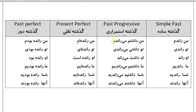گذشته استمراری (past progressive): من داشتم می‌راندم، تو داشتی می‌راندی، او داشت می‌راند، ما داشتیم می‌راندیم، شما داشتید می‌راندید، آنها داشتند می‌راندند. گذشته نقلی (present perfect): من رانده‌ام.